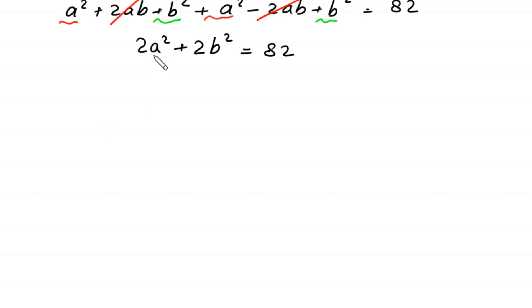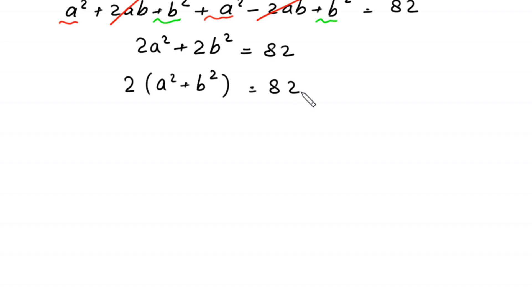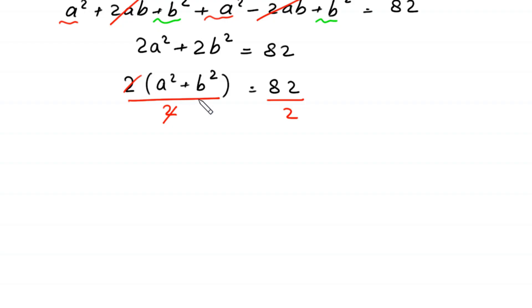We can factor out 2: 2(a² + b²) = 82. Dividing both sides by 2, we get a² + b² = 41.